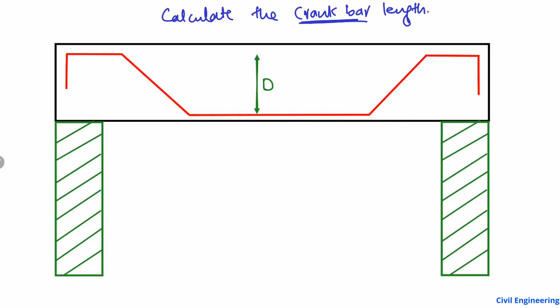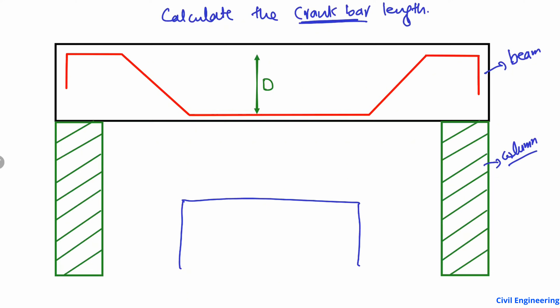First of all, consider this example: here is a beam and these are the two columns. The beam is a horizontal member and the columns are vertical members that take the load from the beam. This is a kind of frame structure. In the free body diagram, we have a beam — a horizontal member — and also two columns or vertical members.